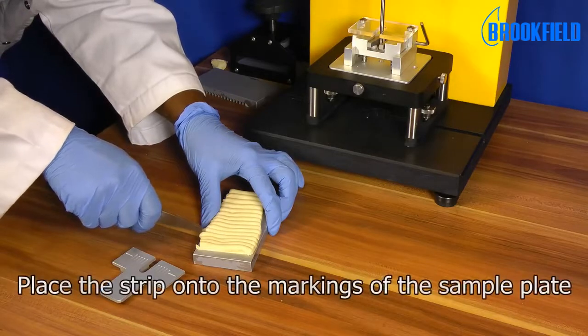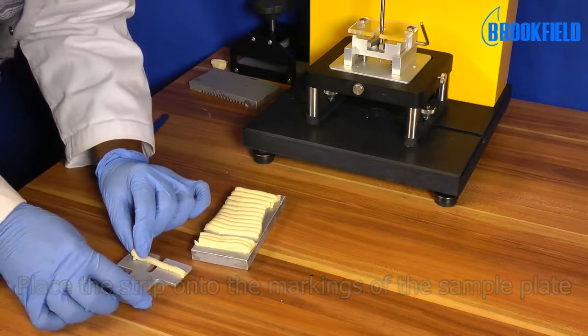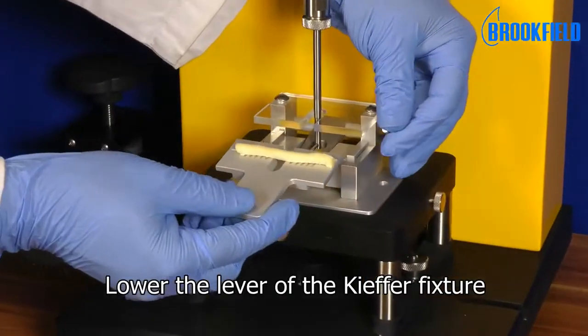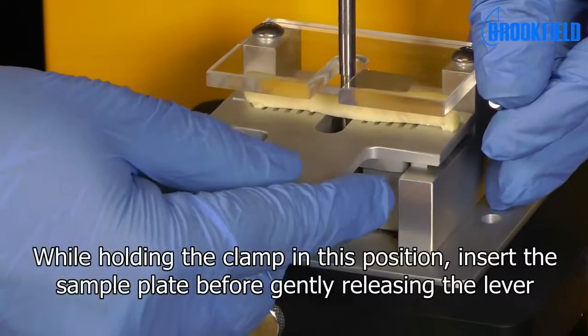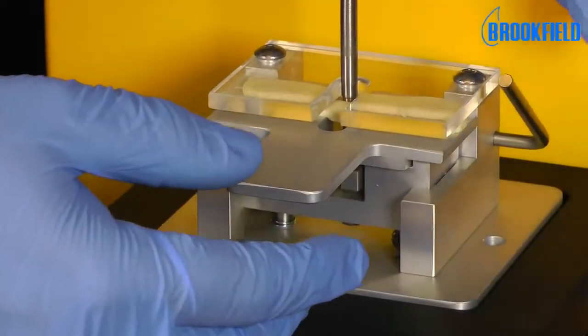Place the strip onto the markings of the sample plate. Care must be taken not to stretch the sample. Lower the lever of the Kiefer fixture. While holding the clamp in this position, insert the sample plate before gently releasing the lever.